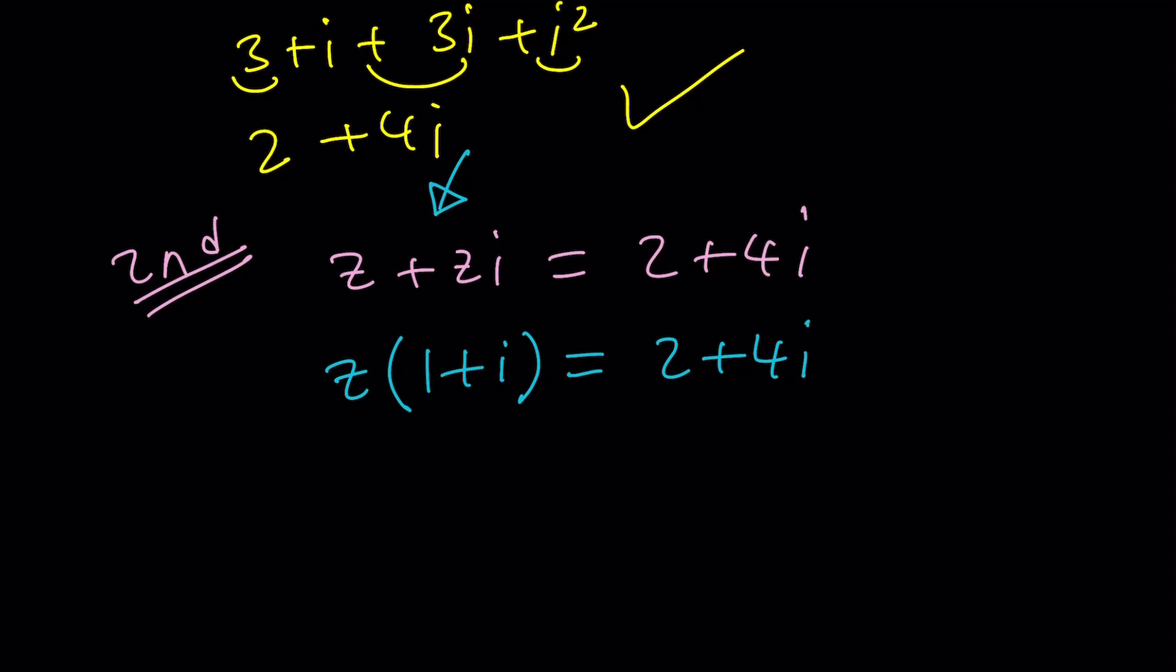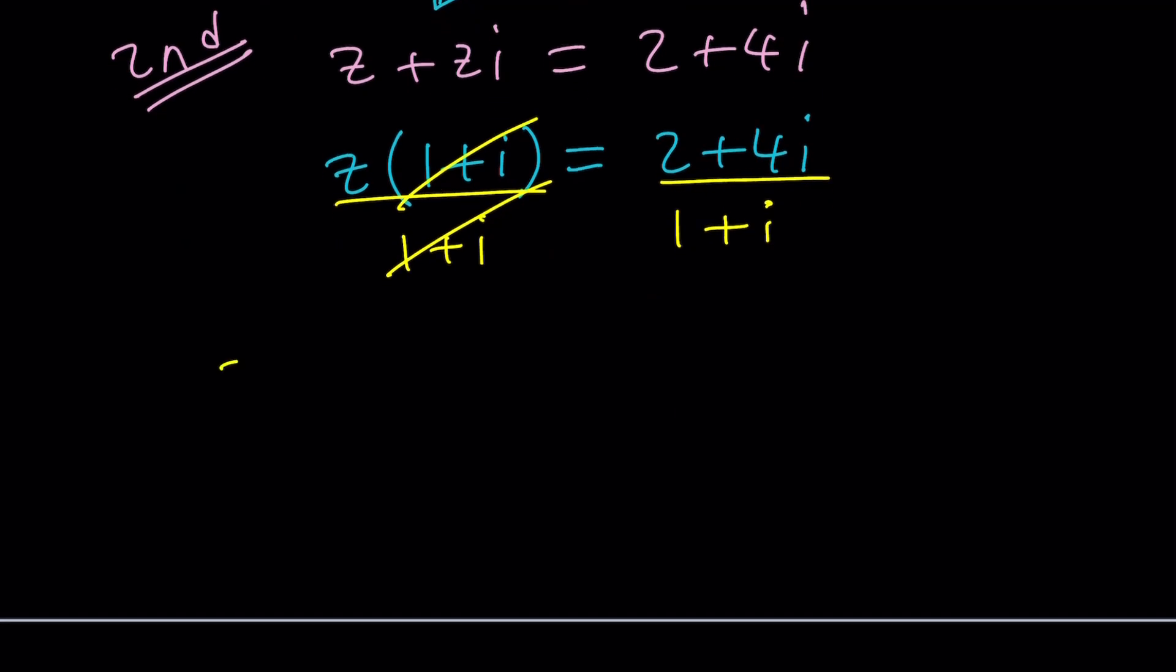And this kind of looks like division, doesn't it? You multiply a complex number by another complex number, and the result is a complex number. To find one of the factors, you must use division. Let's go ahead and divide both sides by 1 plus i. And of course, you can't directly divide, so what you need to do is use conjugates.